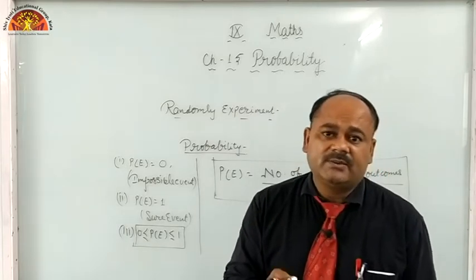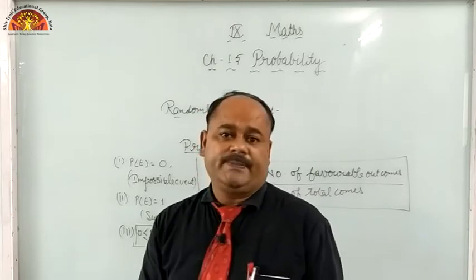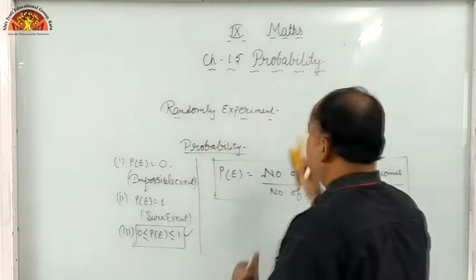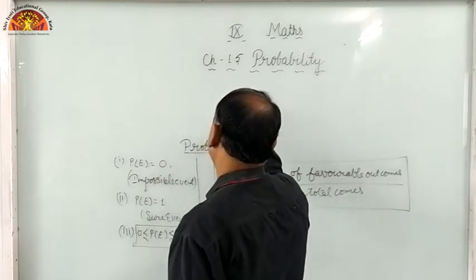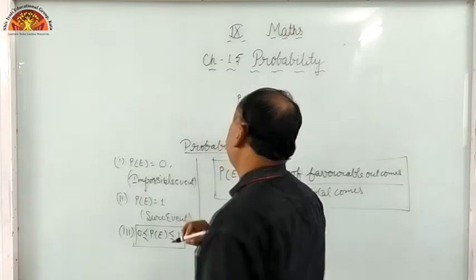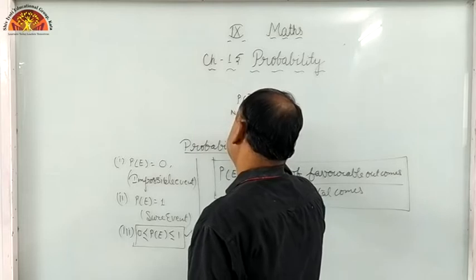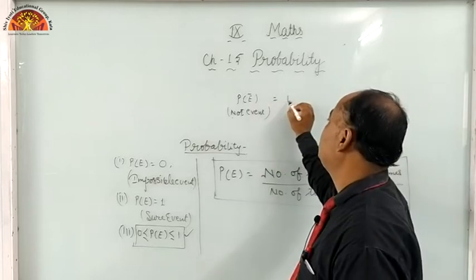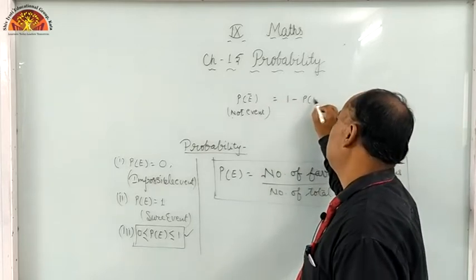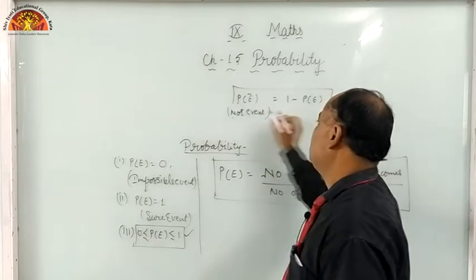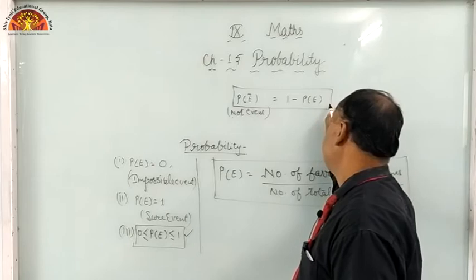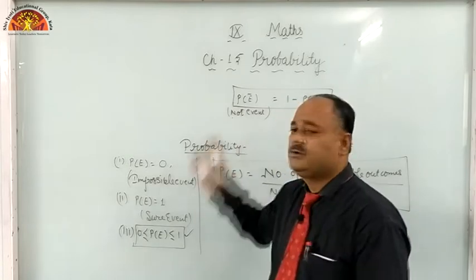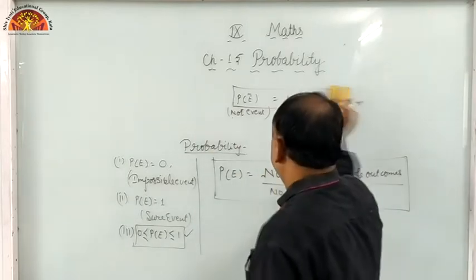If your answer goes less than zero, the solution is wrong. If it goes more than one, it is also wrong. The probability of any event lies between zero to one. The probability of an event NOT occurring is represented by P̄(E) — P bar. The formula is: P̄(E) = 1 − P(E). Subtract the probability of the event occurring from one to find the probability of the not event.